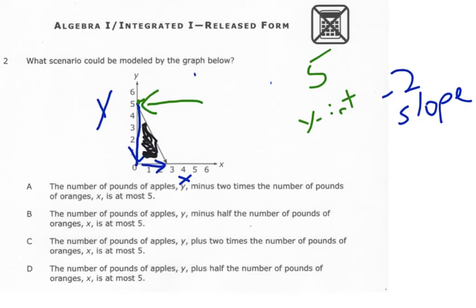And since this is shaded in below the line, I know it's less than or equal to. And I know my inequality is going to be written y is less than or equal to. And the reason it's equal to is because it's a solid line. And that would be negative 2x plus 5. So that's what we're looking for.